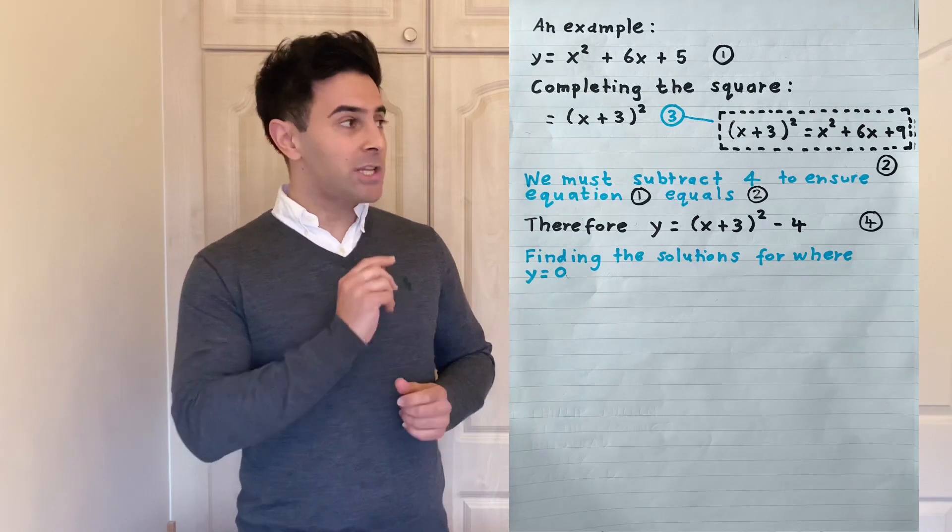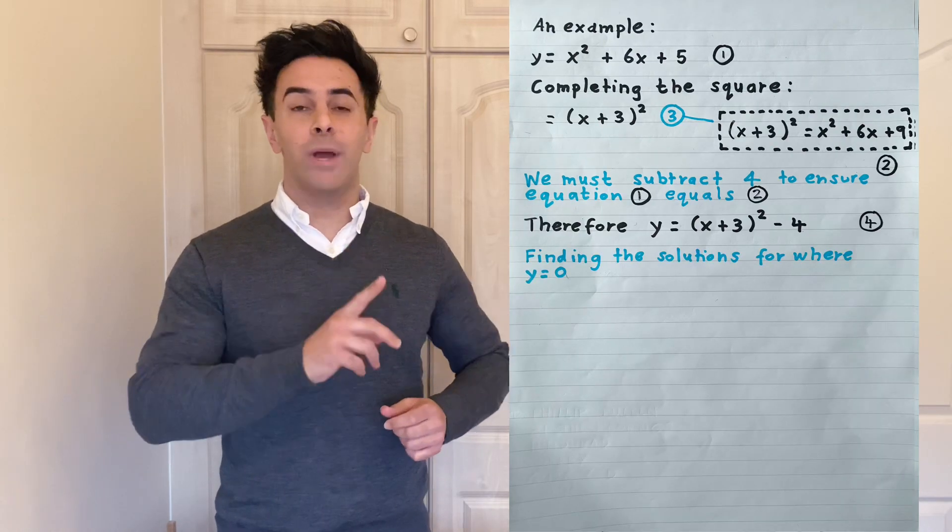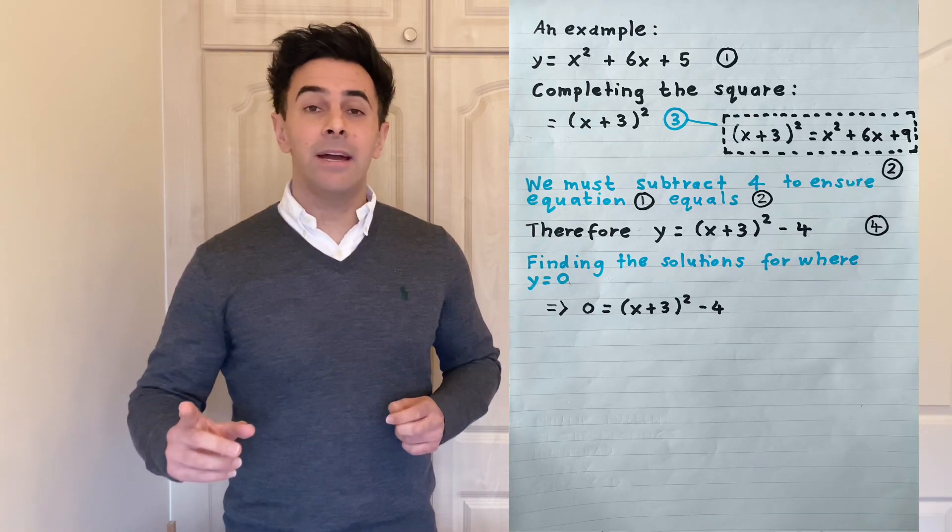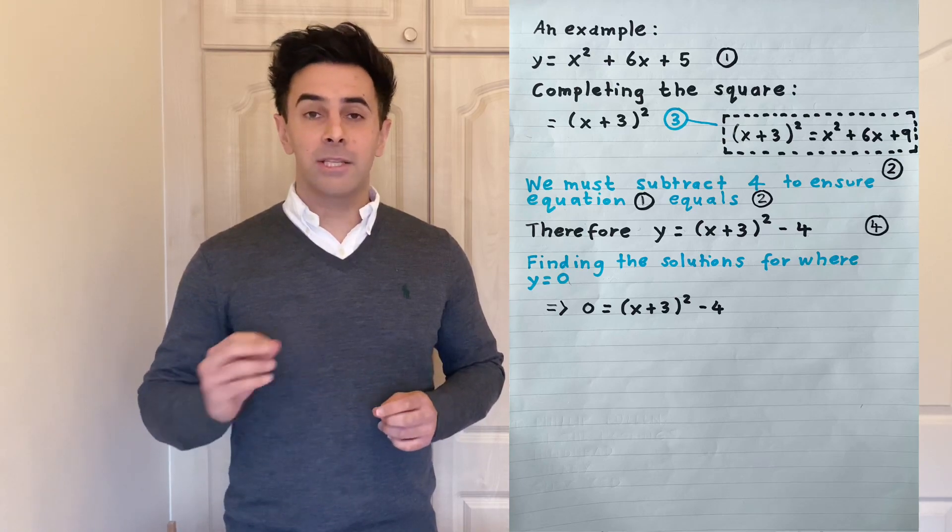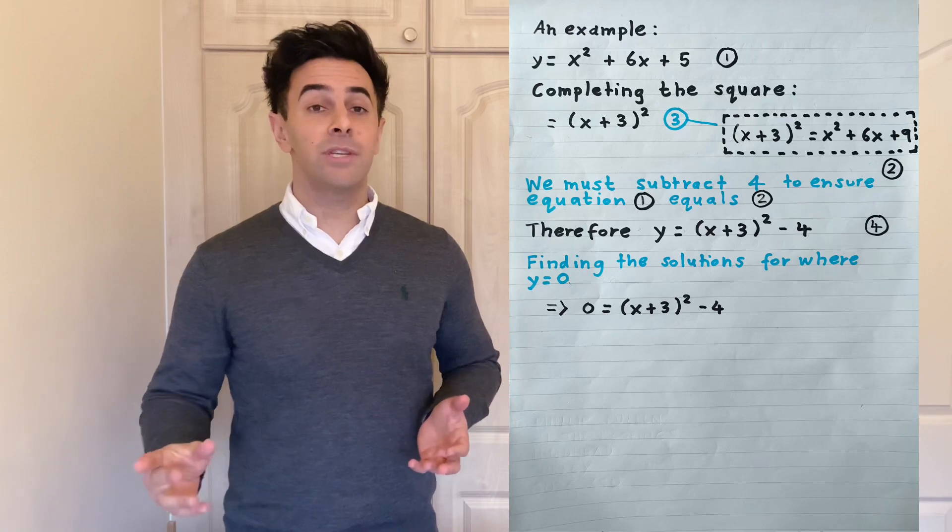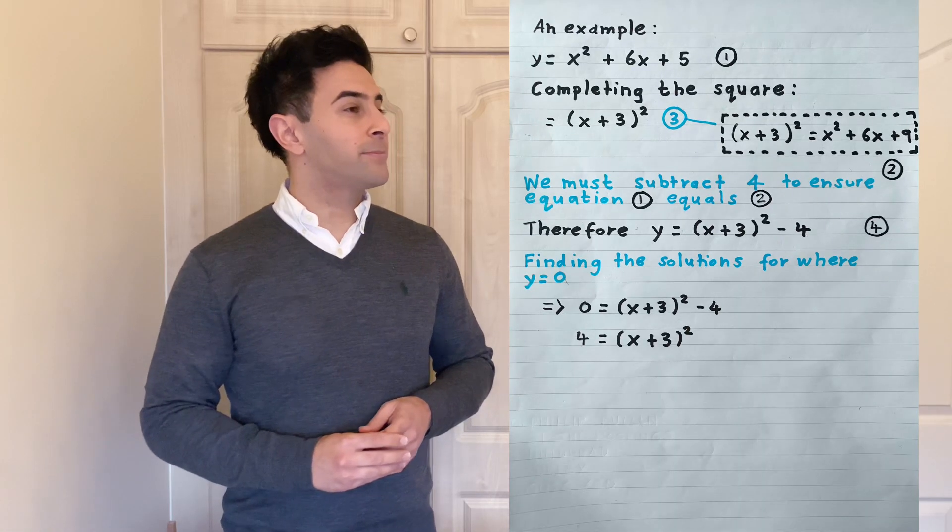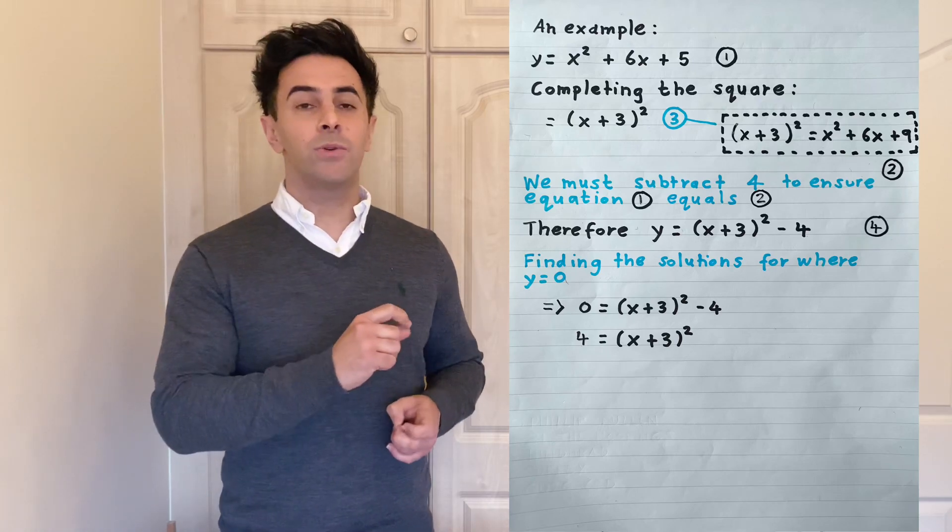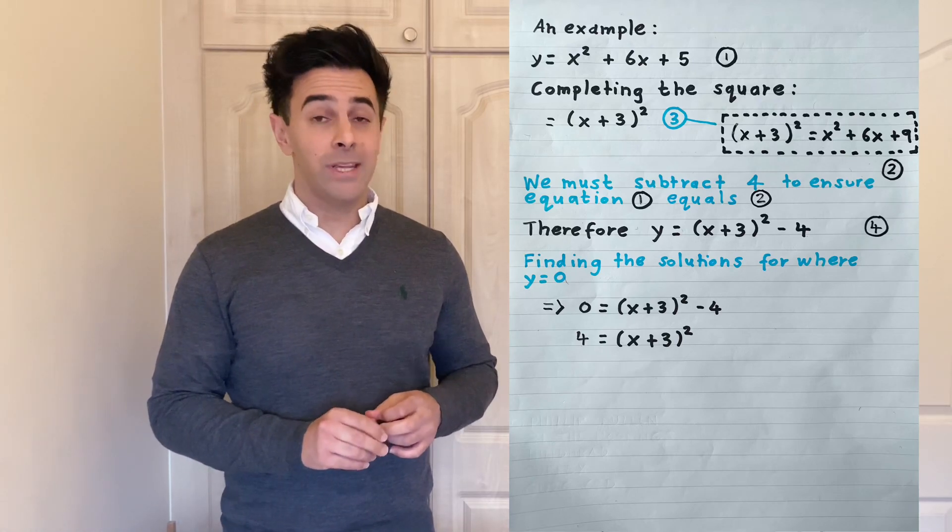Well interestingly here we have an x squared term, and we also know that when you take the square of any number the value must be 0 or greater. So the answer is greater than or equal to 0. By doing a little bit of rearranging here we can find that 4 is equal to x plus 3 all squared.